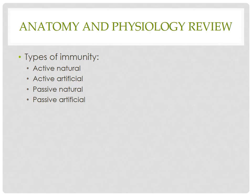To understand how the immune system works, here is a brief review of types of immunity. Types of immunity are divided into active and passive. Active natural immunity can be described as someone experiencing or having the disease — a good example is mumps. Active artificial immunity is receiving a vaccination, such as MMR, that will induce an immune response.